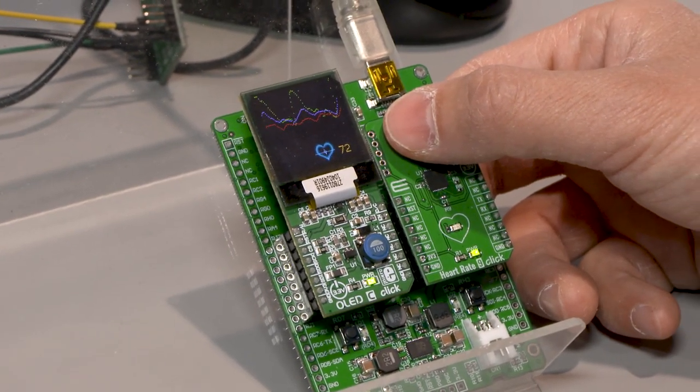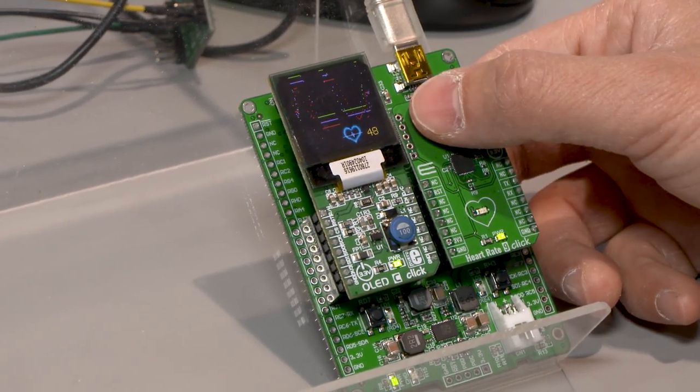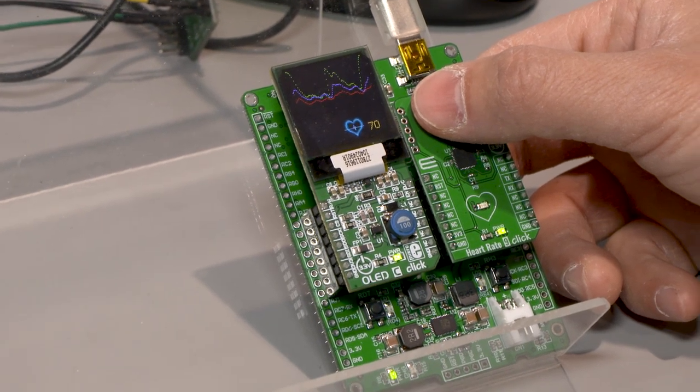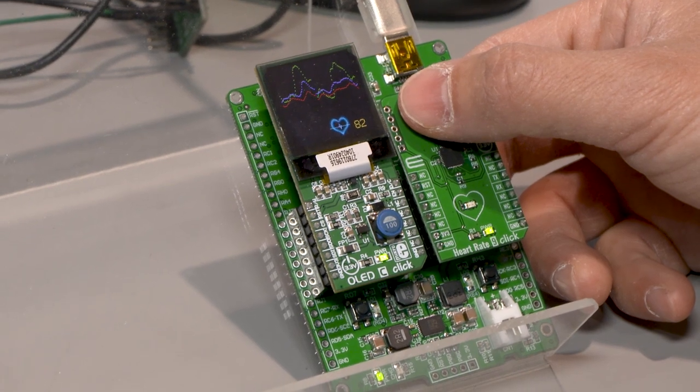We're showing that capability by using a red, green, and infrared LED. The waveform on that display shows heart rate and absorption in the tissue with the green LED, and the red and infrared for other types of applications.